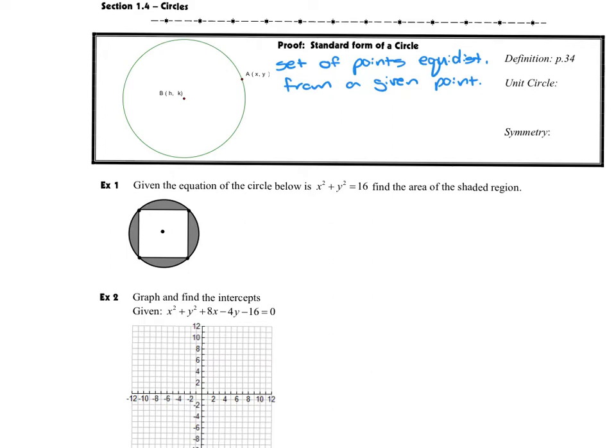Starting with our definition of a circle, it's the set of points that are equidistant from a given point. Now, the point that they're going to be equidistant from is going to be our center. So you can see here in the figure that we are going to have our center, and we are going to call it HK. Then we're going to have some point on the circle out here. We'll call it XY. Every point on the circle will satisfy the equation, and we could draw in our radius here and call that R.